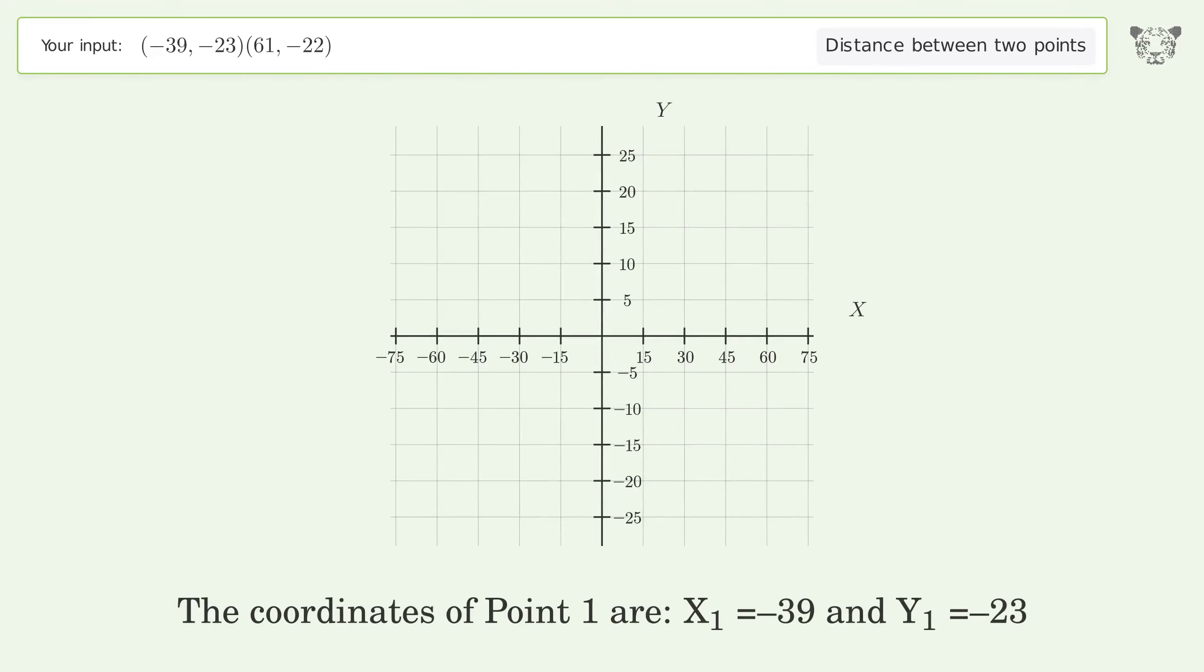The coordinates of point 1 are x1 equals negative 39 and y1 equals negative 23. The coordinates of point 2 are x2 equals 61 and y2 equals negative 22.